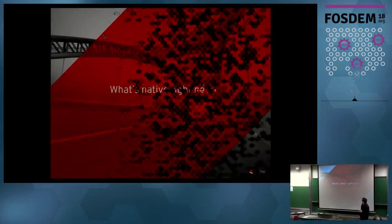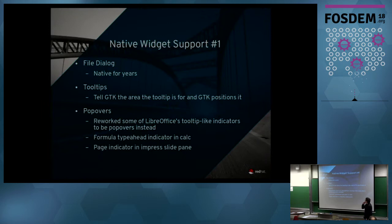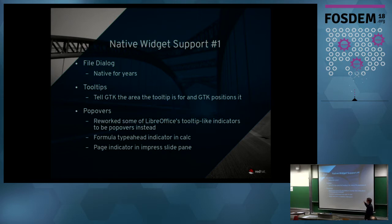Running on VGA but it works. So what's native right now in the existing releases? We've had a native GTK file dialog forever. The most recent releases with the GTK3 backend have native tooltips — we just tell GTK where the tooltip is and what the text is, and GTK itself renders it. That means if you have two screens side by side and the tooltip is cut off, that's a GTK issue, not a LibreOffice issue.